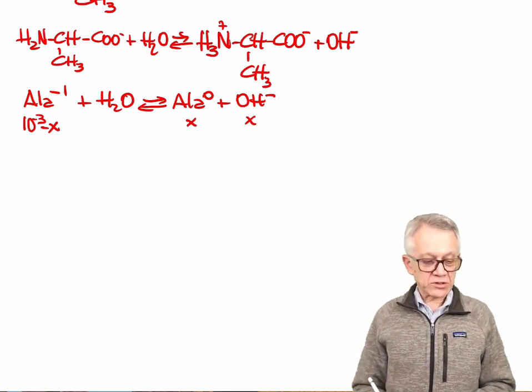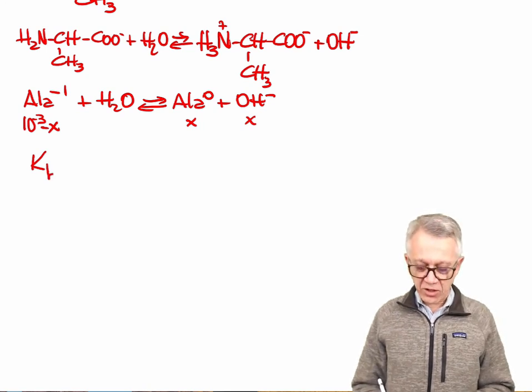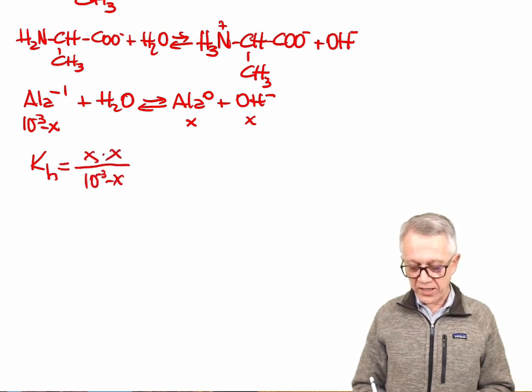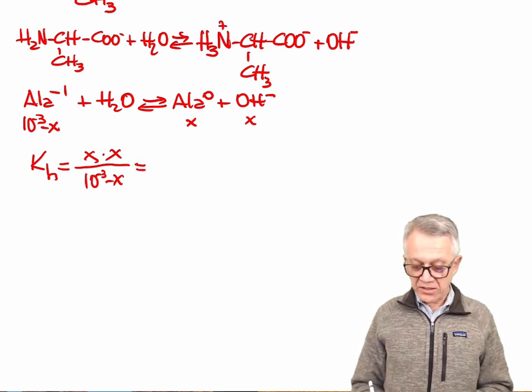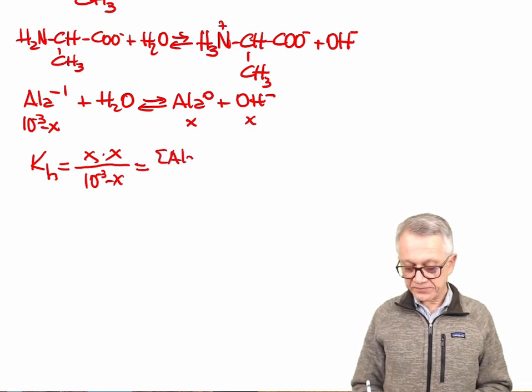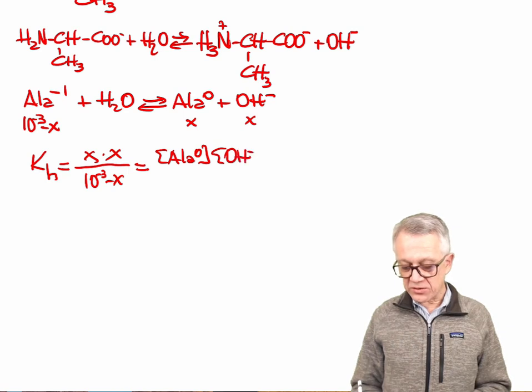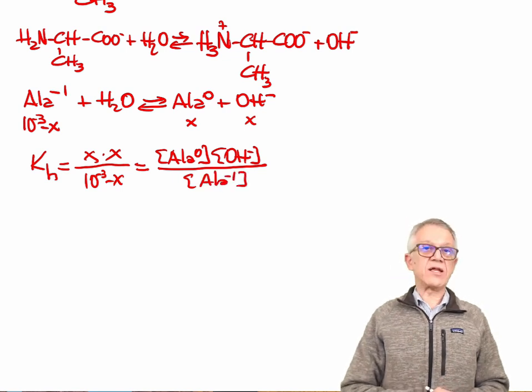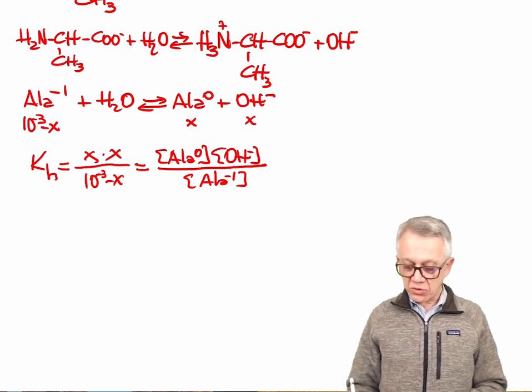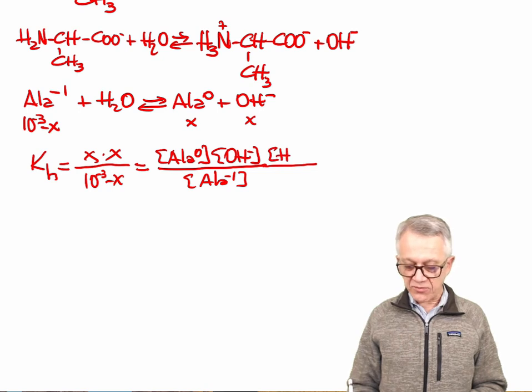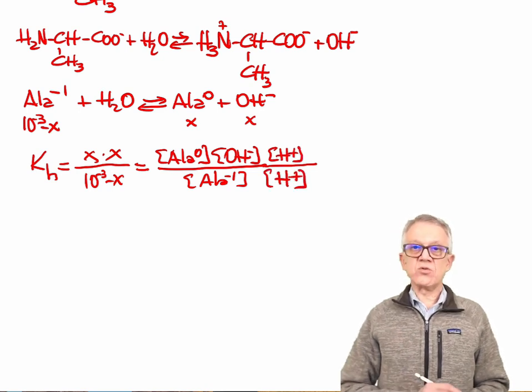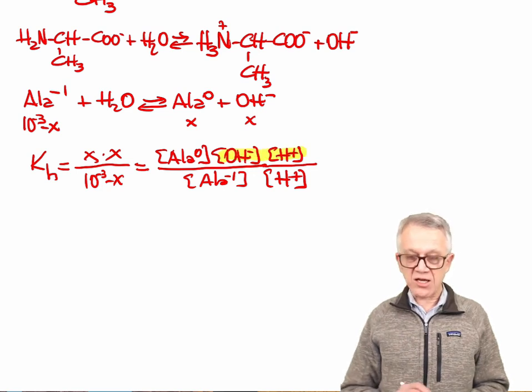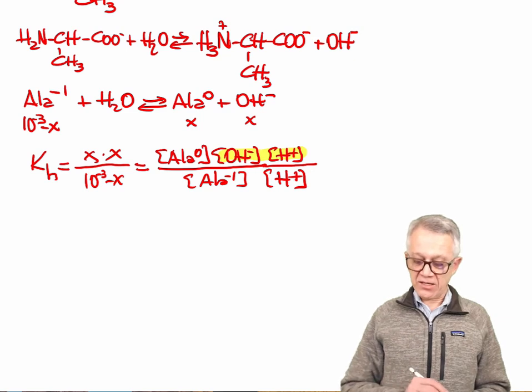We have now the equilibrium constant for this which is going to be an equilibrium of hydrolysis, so a base if you like. X times X divided by 10 minus X. If you write down this equilibrium, this is going to be alanine zero times the concentration of hydroxide divided by the concentration of alanine minus. This is the equilibrium constant for this hydrolysis. One trick is that we can multiply this by the concentration of protons and divide by the concentration of protons, which doesn't alter the results. The idea of doing that is because if you do this, we are going to have here the Kw.